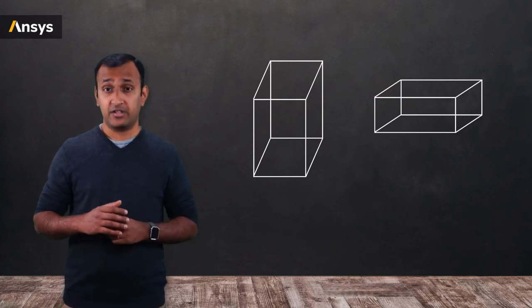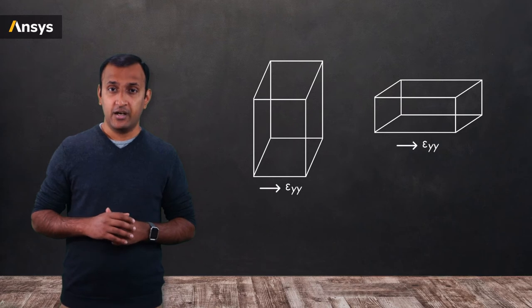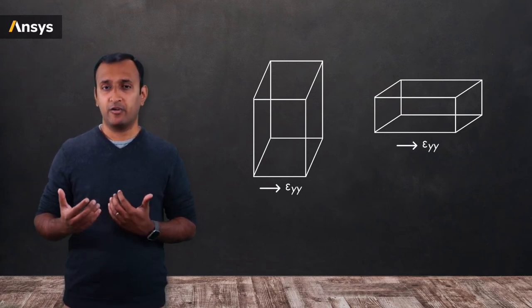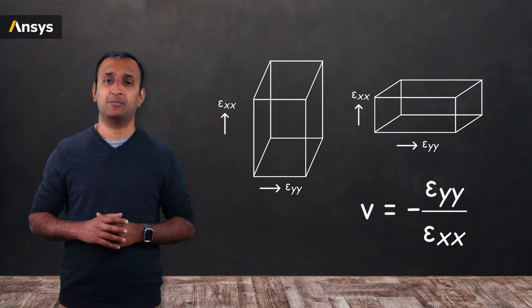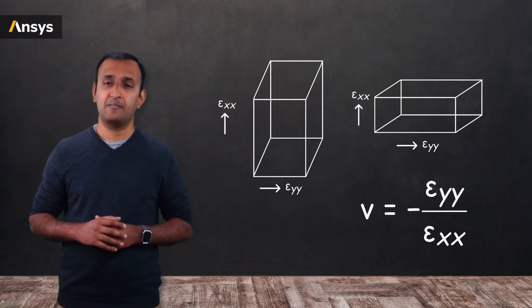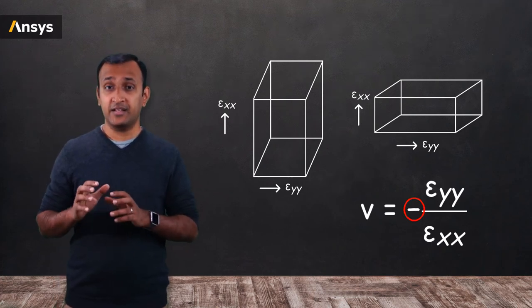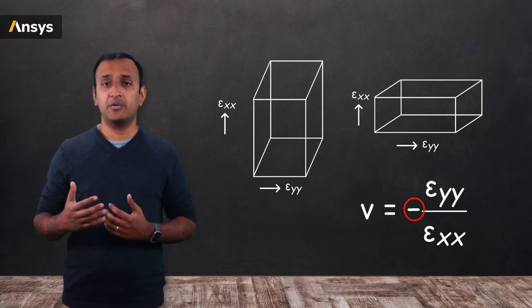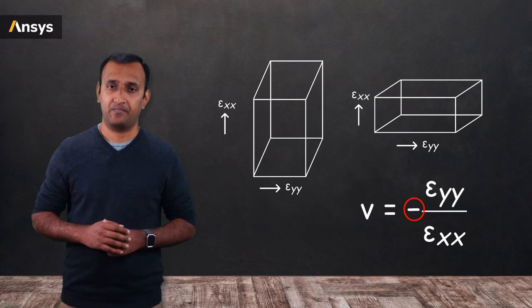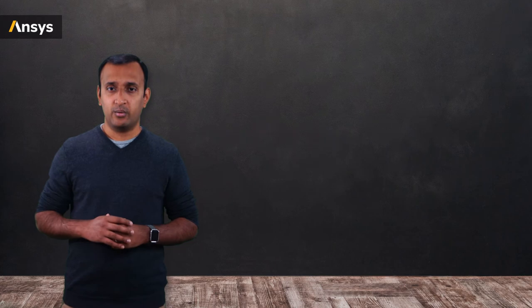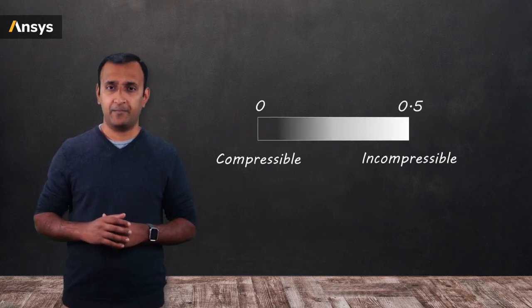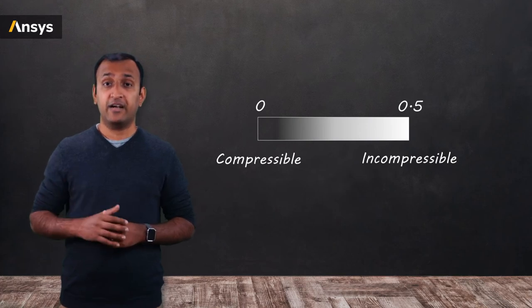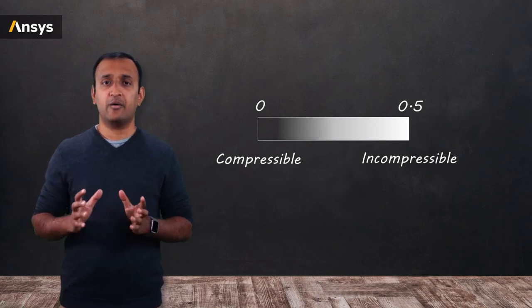And the ratio of strain in lateral direction to the strain in direction of loading is the Poisson's ratio. The negative sign in this relation indicates that the lateral strain is in the direction opposite to the loading direction. Typically, the value of Poisson's ratio ranges between 0 and 0.5 with 0 indicating that the material is compressible to 0.5 indicating that the material is incompressible.